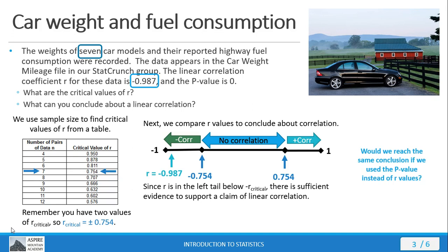Now would we reach the same conclusion if we use the p-value instead of the critical R values? Well, we would. Our p-value is 0, and because 0 is less than 5% or any other threshold we might use, we have a p-value that's considered low and in a region of acceptance. So we conclude, just as we did with the critical R values, that there is sufficient evidence to support a claim of linear correlation.